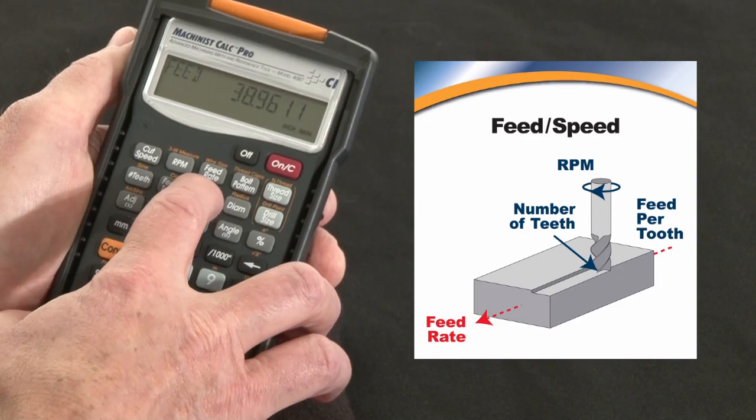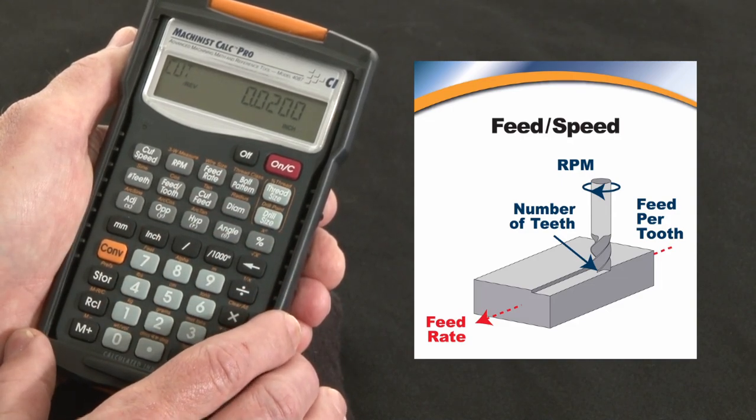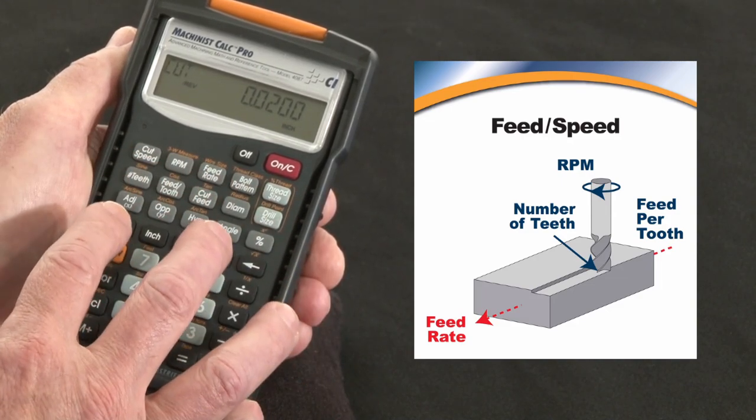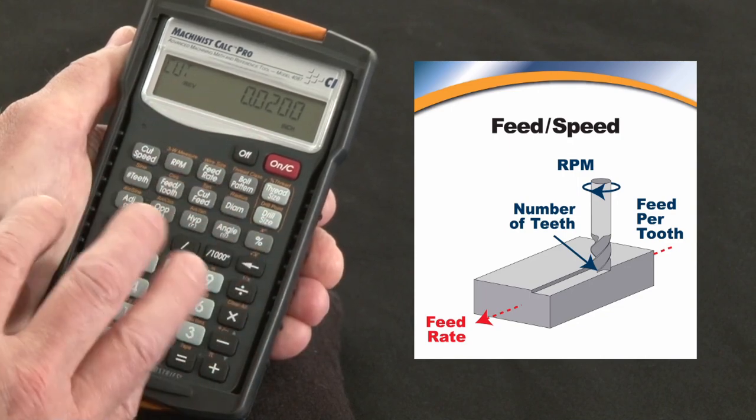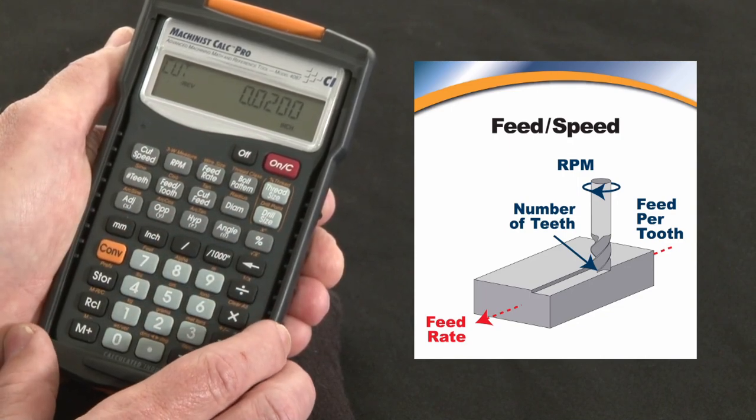If you wanted to find out what your cut feed is, it's about 20 thousandths per revolution. So you can change any one of these variables and play what if and see what the scenario comes out to be to really optimize your productivity.